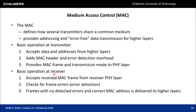At the receiver, the MAC layer accepts a MAC frame from the physical layer, checks for frame errors using the CRC, and if the frame has no detected errors and has the correct MAC address, delivers it to higher layers. For traffic safety broadcast applications, a broadcast MAC address is used, which is always accepted by the receiving MAC layer.